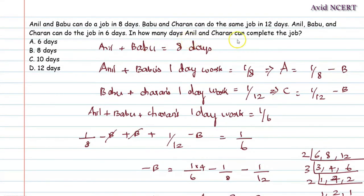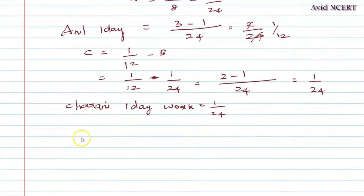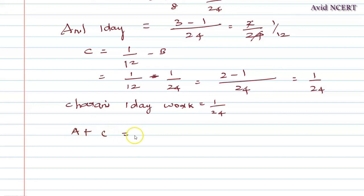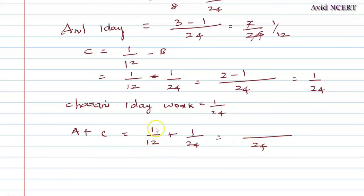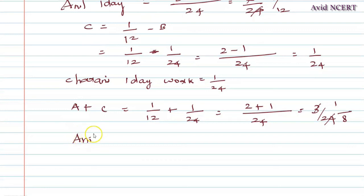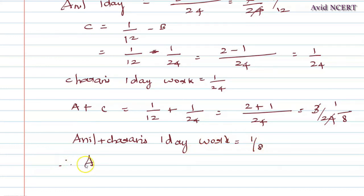The question is: in how many days can Anil and Charan complete the job? We add A plus C: Anil's one-day work plus Charan's one-day work = 1/12 plus 1/24. With LCM 24, this is 2 plus 1 = 3, divided by 24, which simplifies to 1/8. Therefore, Anil and Charan can complete the work in 8 days.